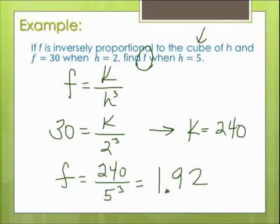And again, it's hard to... Well, in this case, it is easy to check. Inverse means they move in opposite directions. If one variable goes up, the other one goes down. So f went from 30 to 1.92, so it went down. So that means h should go up because they move in opposite directions when it's inverse proportion. h went from 2 to 5, so it did go up, makes sense. I think I'm right. So I'm right.